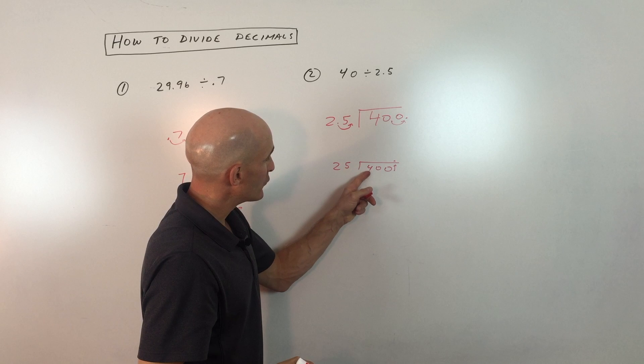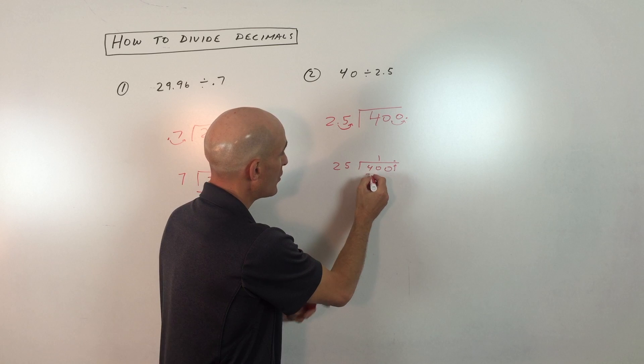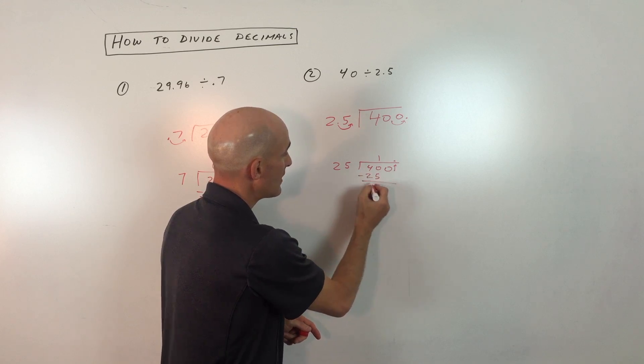Now does 25 go into 4? No. Does 25 go into 40? Yes. How many times? One time. 1 times 25 is 25. Subtract.